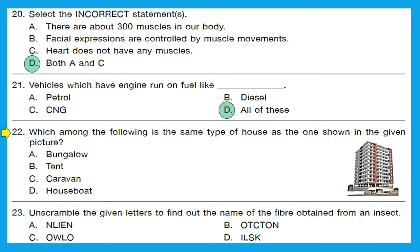Question 22: which among the following is the same type of house as the one shown in the given picture? The picture is of a multi-storied building containing different flats, also called a pakka house. Out of bungalow, tent, caravan, and houseboat, only a bungalow is a pakka house — the others are temporary houses. So option A, bungalow, is the right answer.